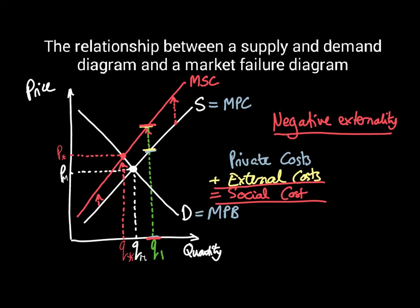What we've got is this gap in between here, which means that when we have a negative externality, we have overproduction of this particular product. So there is allocative inefficiency in this market.